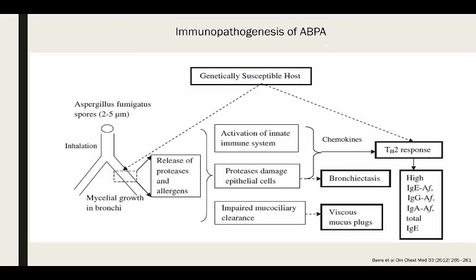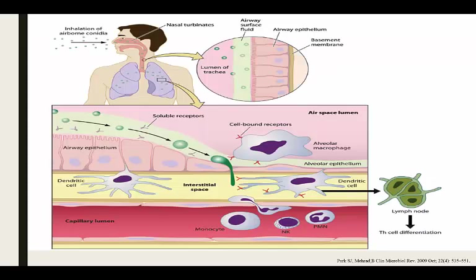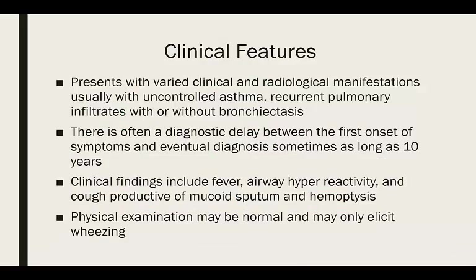A flowchart summarizes what we just talked about: you inhale the spores, they grow, releasing proteases, causing eventual damage to the airway leading to bronchiectasis and viscous secretions.